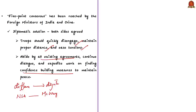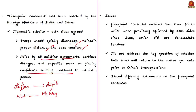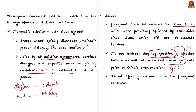This is a welcome move as thousands of troops from both countries remain deployed along the border and tensions across the LAC are very high. However, the agreed five-point consensus outlines the same points previously affirmed by both sides since June. Even though a similar consensus was arrived at in June 2020, tensions have not eased. The consensus also did not address the key question of whether both sides will return to status quo prior to China's transgressions in April 2020.